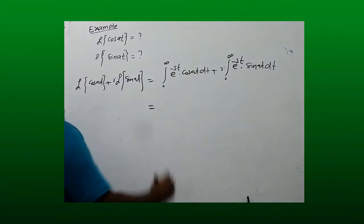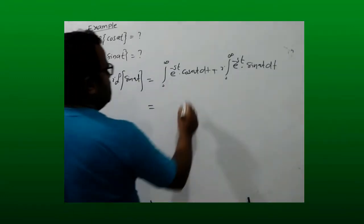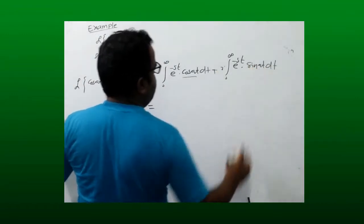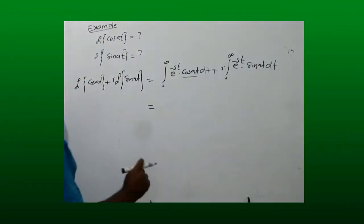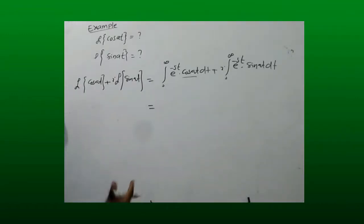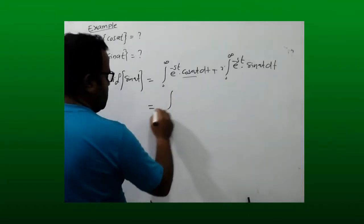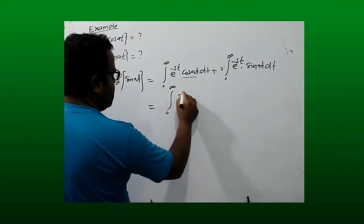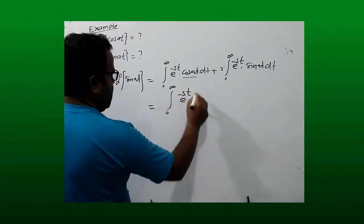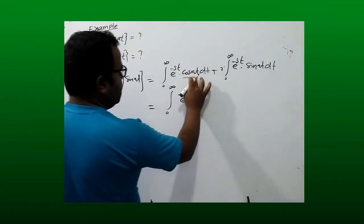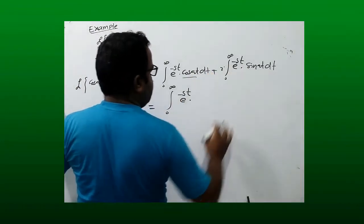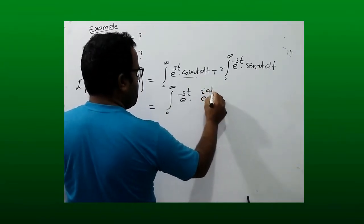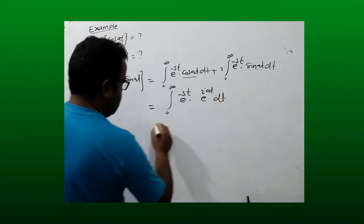We know that cos(at) + i·sin(at) = e^(iat). So the combined integral from 0 to infinity of e^(-st)·[cos(at) + i·sin(at)] dt is converted into the integral of e^(-st)·e^(iat) dt.